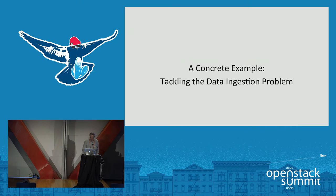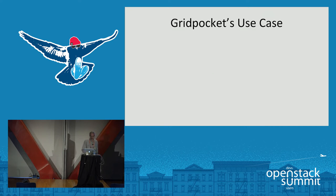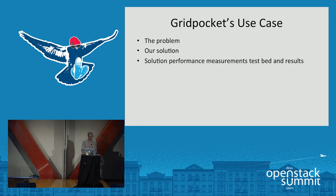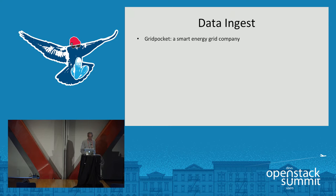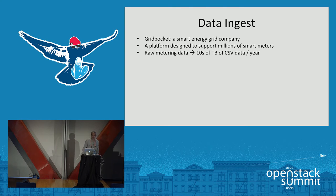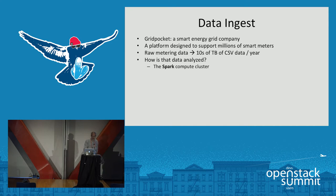We'll now move to a concrete example of this use case. In the next 10 minutes, we will discuss Grid Pocket's use case — the problem, the solution, performance measurements in terms of testbeds and results, and finally a short demo. The problem is data ingest. Grid Pocket is a smart energy grid company. Its platform supports up to millions of smart meters, and these meters produce 10 terabytes of CSV data per year.